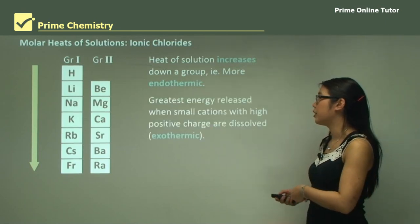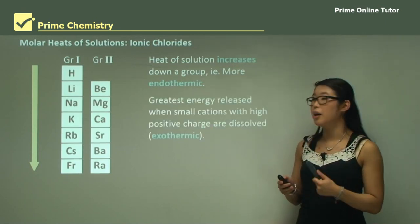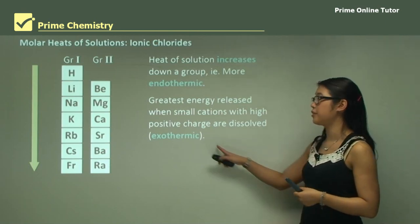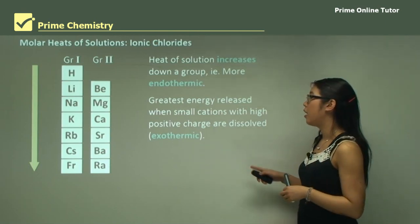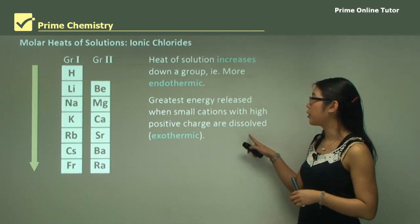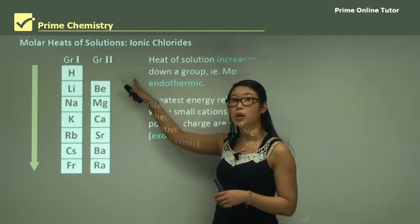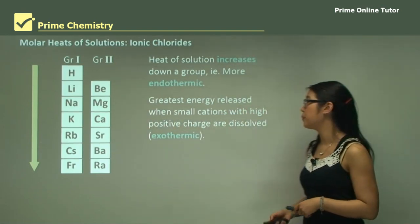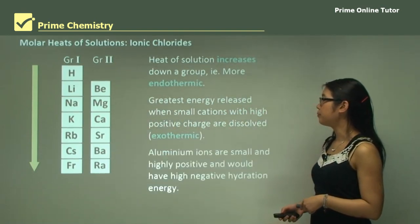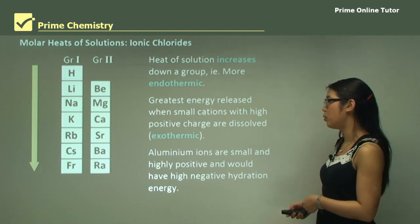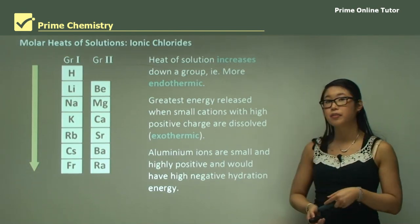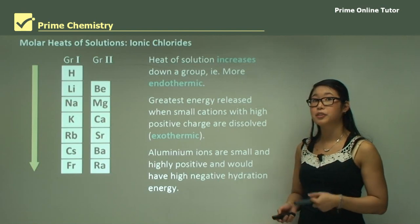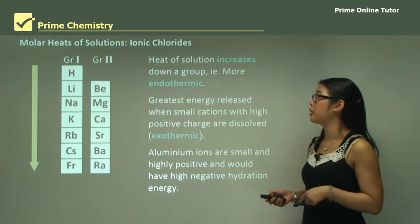The greatest energy released is when small cations with a high positive charge are dissolved, making it exothermic. So the greatest energy release is for the ions at the top of the group, and as we go down it becomes more and more positive. Aluminum ions are small, highly positive, and have high negative hydration energy, meaning very exothermic.